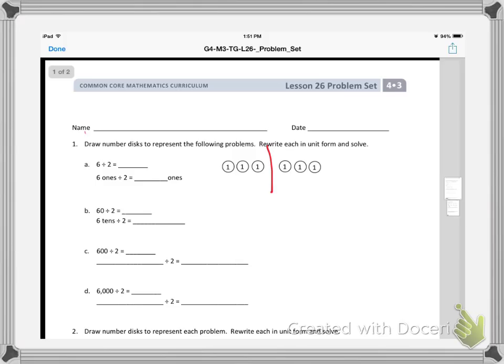So here is the problem set. The directions say draw number disks to represent the following problems. Rewrite each in unit form and solve. So the problem says 6 divided by 2.